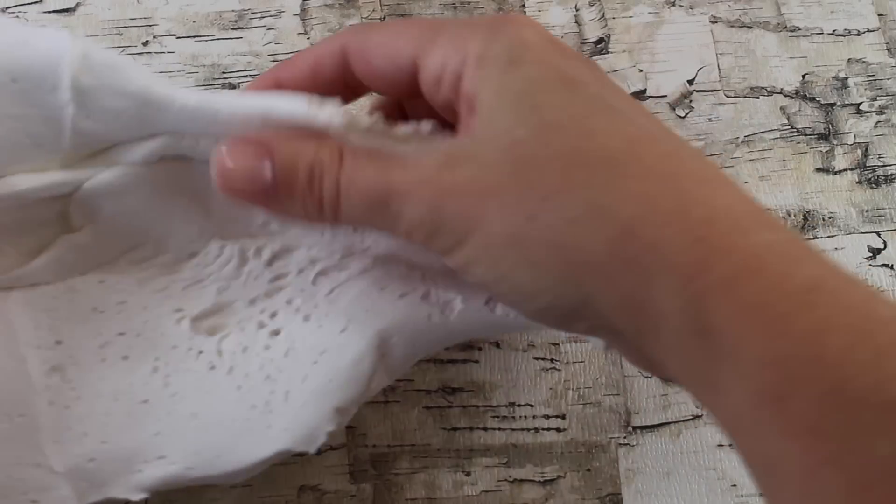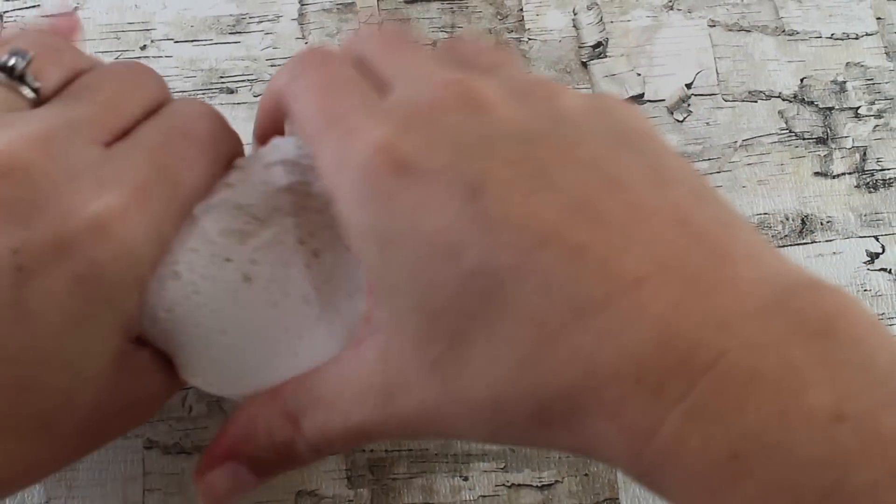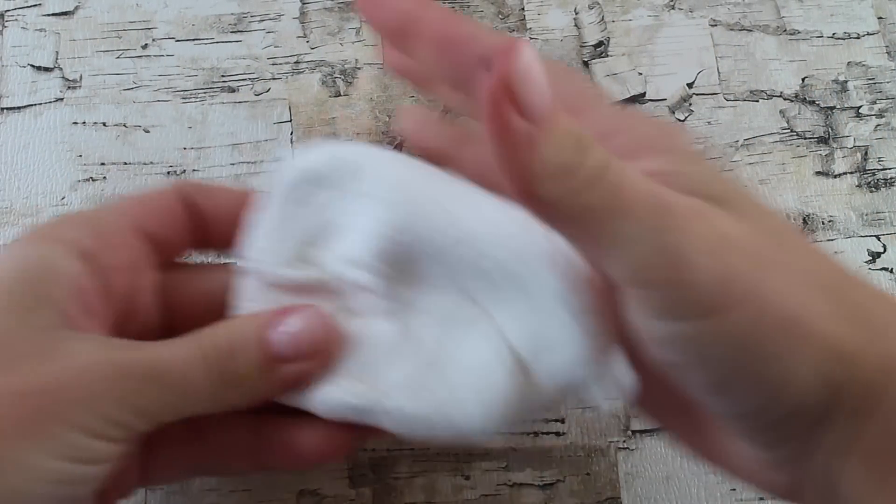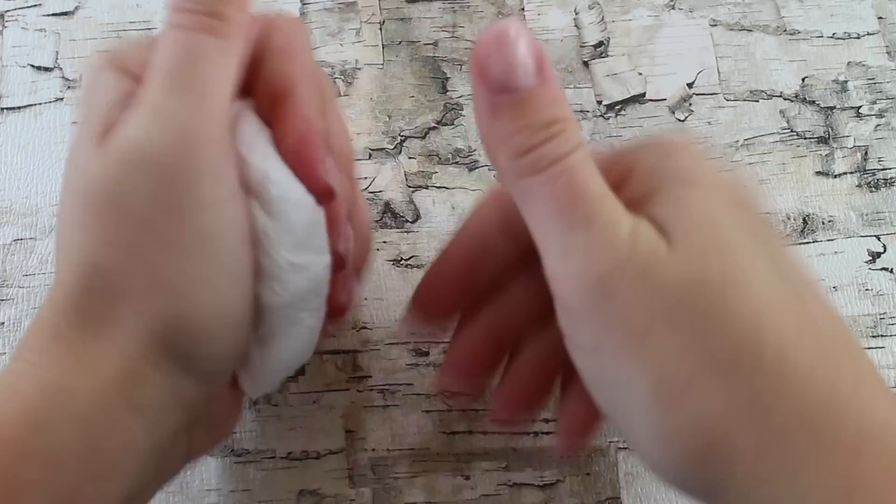Now for your dough, take a big wad of model magic. Just a big chunk out of that model magic. Then you can roll it up into a ball to get out any creases.